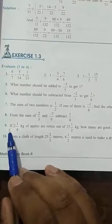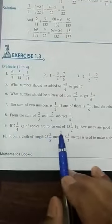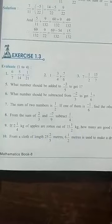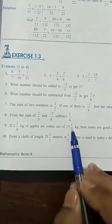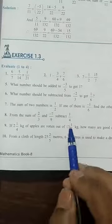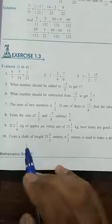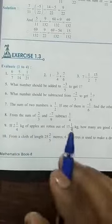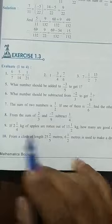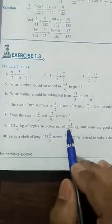In question number 9, if 2 and 1 upon 4 kg of apples are rotten out of 15.5 kg, means this is the total weight of the apples, out of these 2 and 1 upon 4 kg are rotten. Rotten means spoiled, we cannot eat this, okay. So we have to throw it, okay.